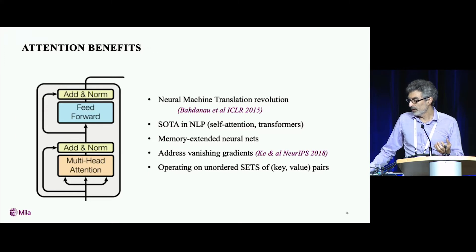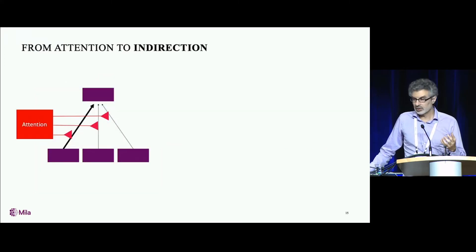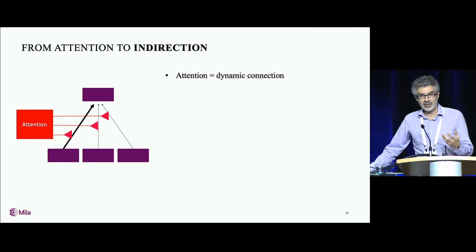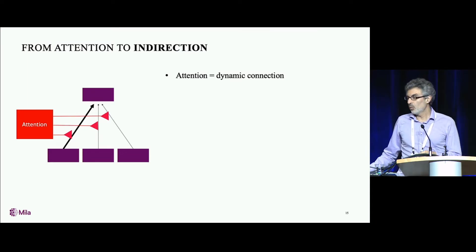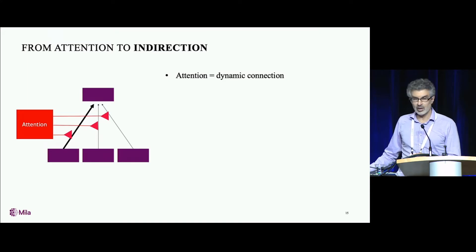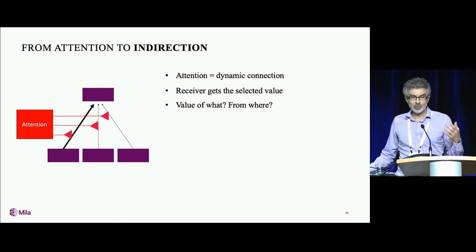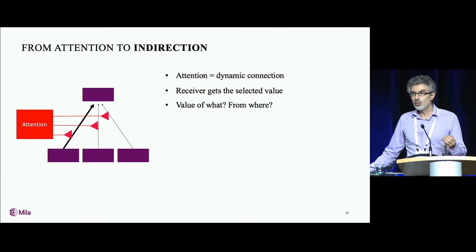Let's see this picture again. We can think of attention as creating a dynamic connection between two layers, whereas in a traditional setting, the connections are fixed. Here, we kind of pick which of the inputs is going to be sent to whatever module we're considering that uses an attention mechanism. But from the point of view of the receiving module, there is a problem — it gets this value, which is one of those in the set of input elements, but it doesn't know where it's coming from. It's the value of what?